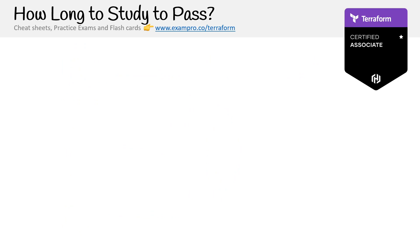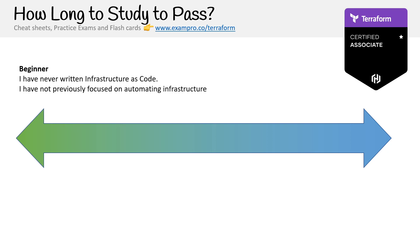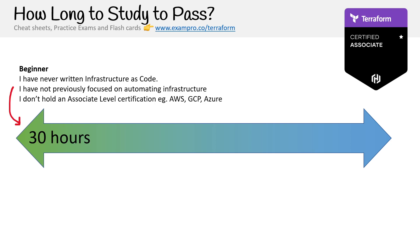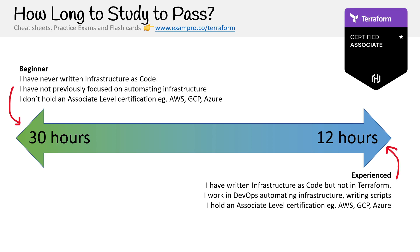How long do you have to study to pass this exam? It's a spectrum based on your background. A beginner — someone who has never written IaC, not previously focused on automating infrastructure, and may not hold an associate certification — could be looking at 30 hours or more. If you're already experienced with writing IaC like Azure Bicep or CloudFormation, work in DevOps, and hold associate-level certification knowledge, you're looking at around 12 hours. For a general study guide, I recommend one to two hours a day for 14 days.